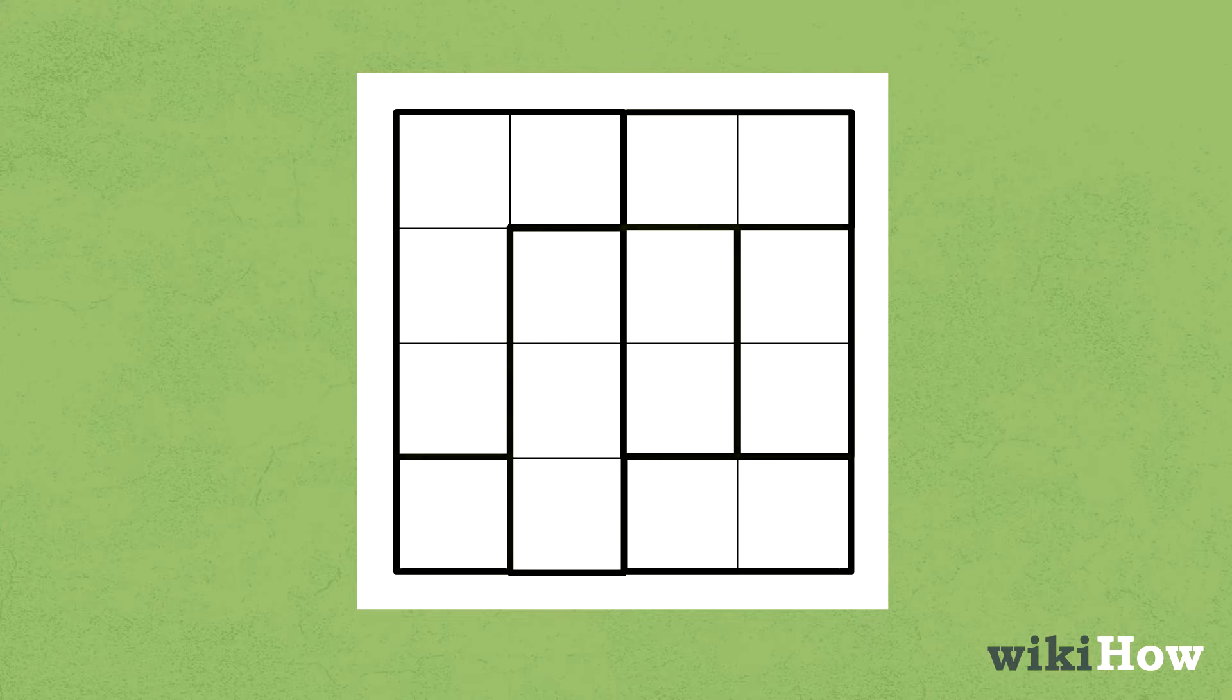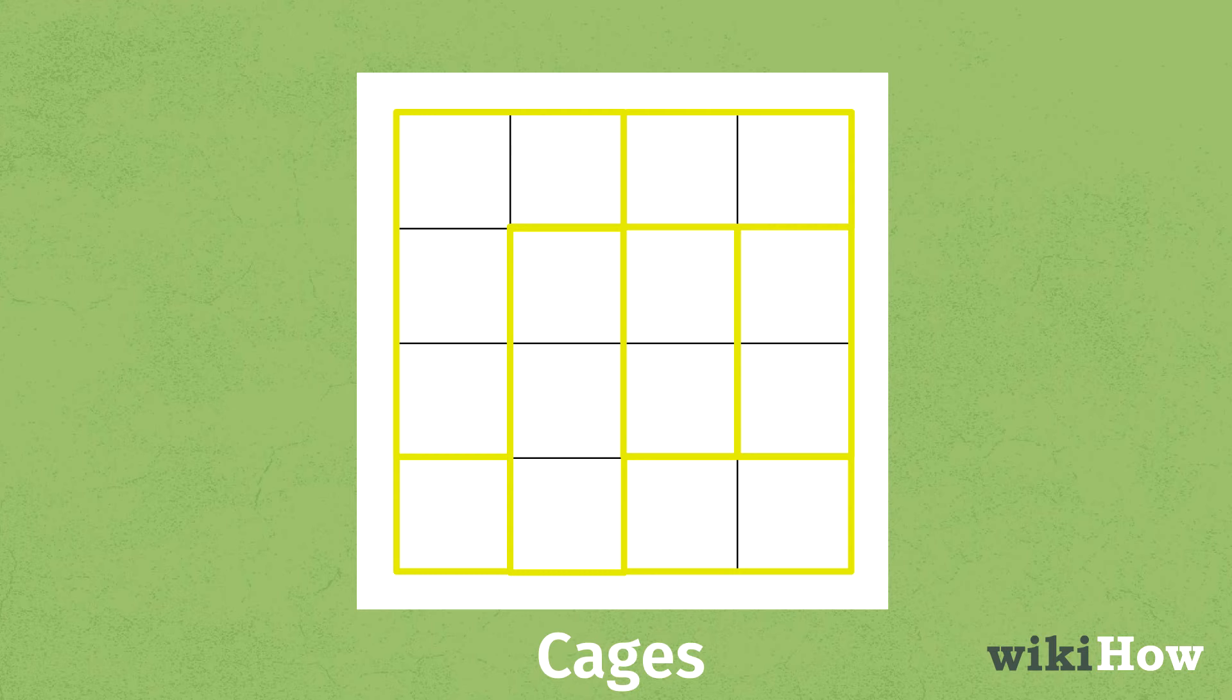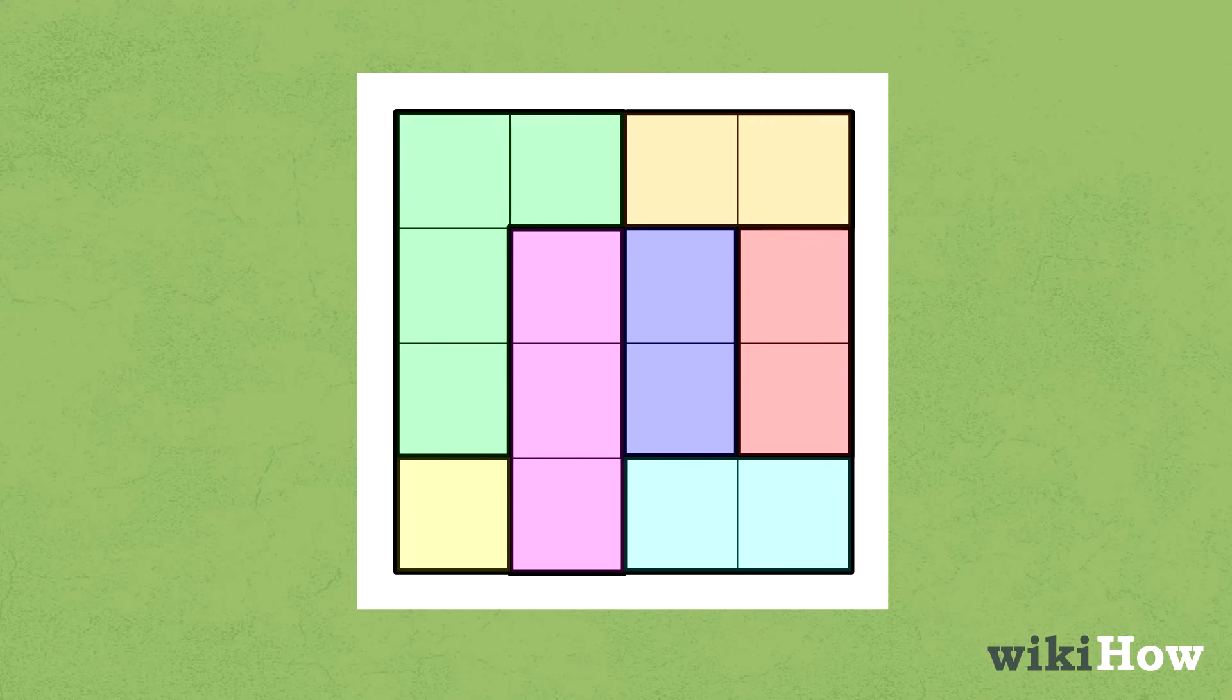Each KenKen puzzle will feature notes in the cages or the thick irregular boxes within the KenKen. Cages can be straight, composed of a single block or many at once, or can be L-shaped.